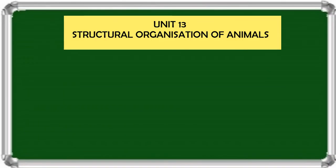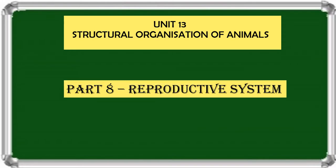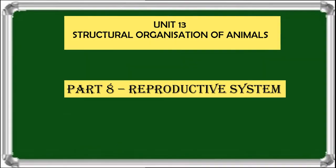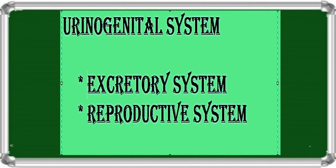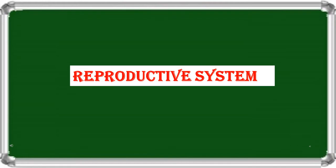In this video, we shall learn Unit 13 Structural Organization of Animals Part 8: Reproductive System of Rabbit. The urinogenital system of rabbit comprises the excretory system and the reproductive system. In the previous video, we dealt with the excretory system. Now we shall learn about the reproductive system.